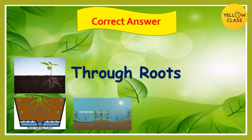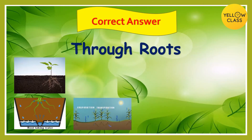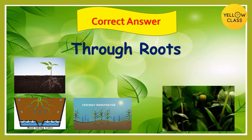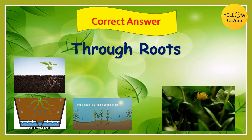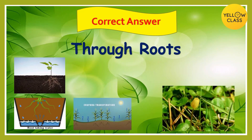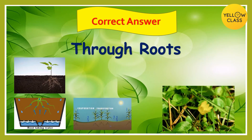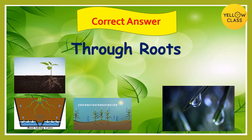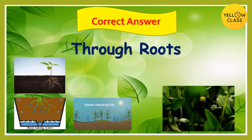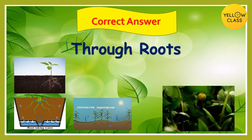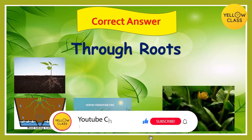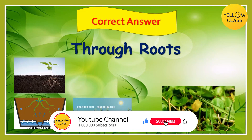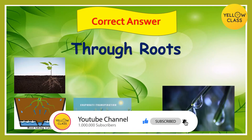The correct answer is through root! Did you know that plants need water to grow? From the root, the water travels to different parts of the plant through the stem. After using five percent of this water, plants release the rest into the air through small pores in their leaves, and this process is called transpiration.